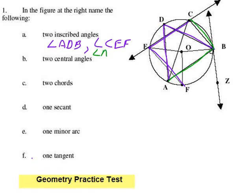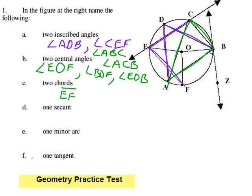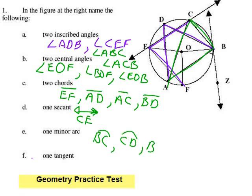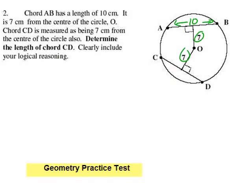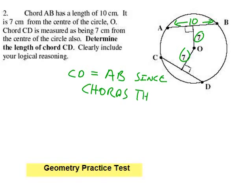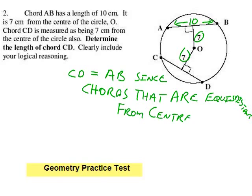A little bit of geometry review here — this was the practice test, more of the definition side. Chord CD is congruent with chord AB, since chords that are equidistant from the center of the circle are congruent. That's rule number 8 or 9.